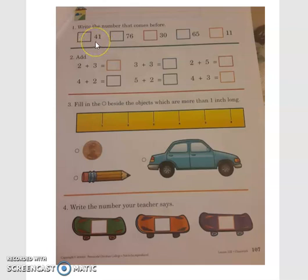What's this number right here? It starts with a 4, so that means it's in the 40's family. And it ends with a 1, so we know it is 41. What comes before 41? 40. So in this box, I need you to write 40.